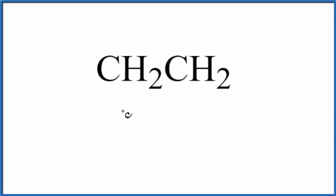In this video, we'll write the Lewis structure for CH2CH2. This is also written as C2H4, and it's called ethene. It's the same thing, just written a little bit differently.